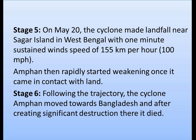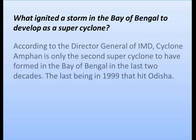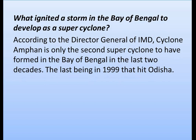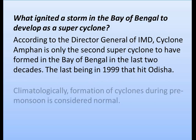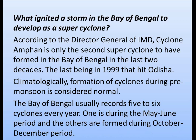According to the Director General of IMD, cyclone Amphan is only the second super cyclone to have formed in the Bay of Bengal in the last two decades — the last being in 1999 that hit Odisha. Climatologically, formation of cyclones during pre-monsoon is considered normal. The Bay of Bengal usually records five to six cyclones every year: one during the May-June period and others during the October-December period.